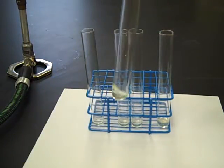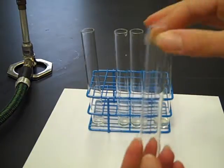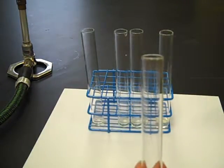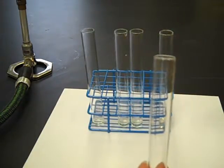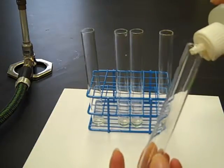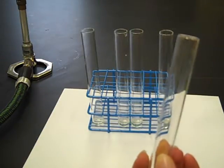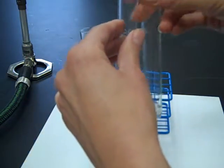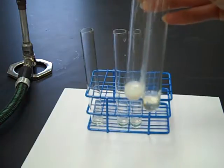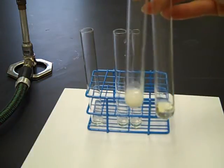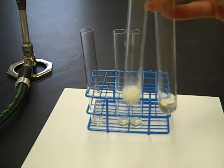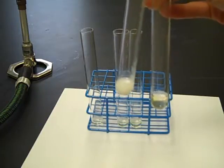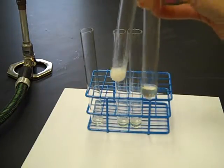To this test tube, we're going to add nitric acid. Okay, comparing to the control, the test tube with nitric acid looks milky, like there is precipitate formed.